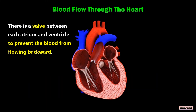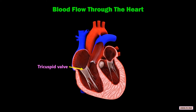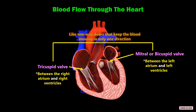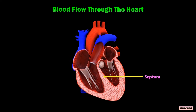There is a valve between each atrium and ventricle to prevent the blood from flowing backward. The tricuspid valve is between the right atrium and right ventricle, and the mitral or bicuspid valve is between the left atrium and the left ventricle. These valves are like one-way doors that keep the blood moving in only one direction. The left and right chambers are separated by a wall of muscle called the septum to prevent the mixing of oxygenated and deoxygenated blood.